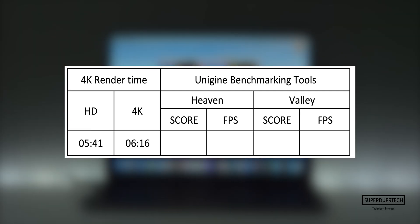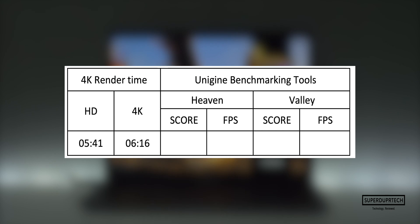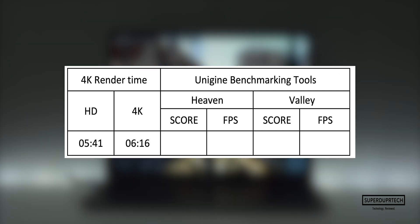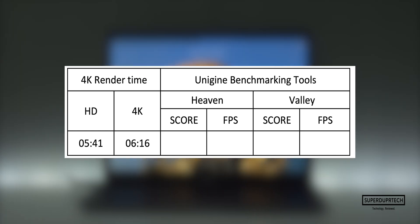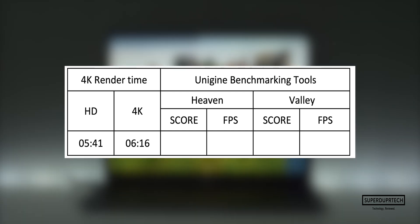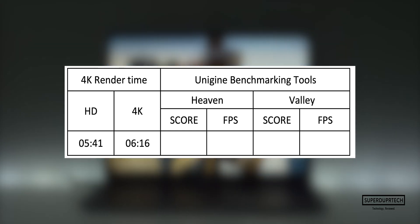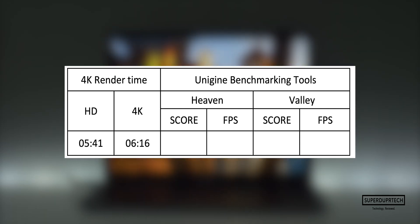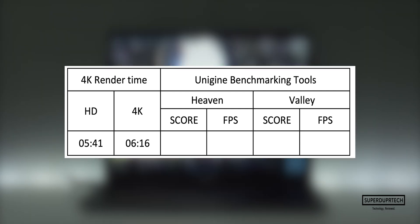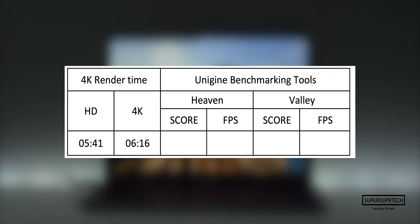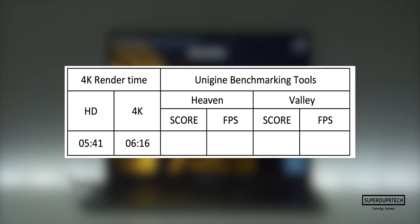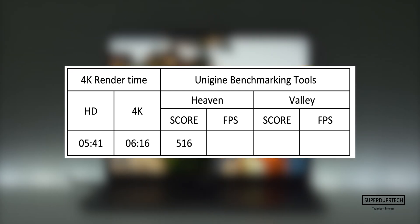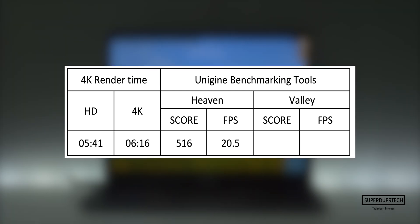The last series of tests came from Unigine. The first was the Heaven benchmarking test, which is a heavy CPU and GPU test that gives a general score based on performance and an average frame rate for rendering a particular scene. With this I got a score of 516 with an average frame rate of 20.5.